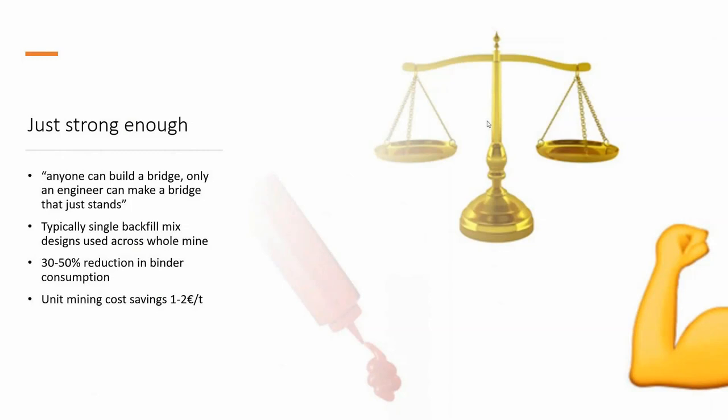Typically, mines have one mix design across the whole mine — say, 5% cement — for all stopes. By adopting an individual stope analysis, you can reduce your cement and binder by 30 to 50%, depending on how optimized the mine was before. The knock-on effect is reducing cement CO2 emissions — cement being a significant emitter of CO2 — and also reducing unit costs of mining, which is always a good thing.